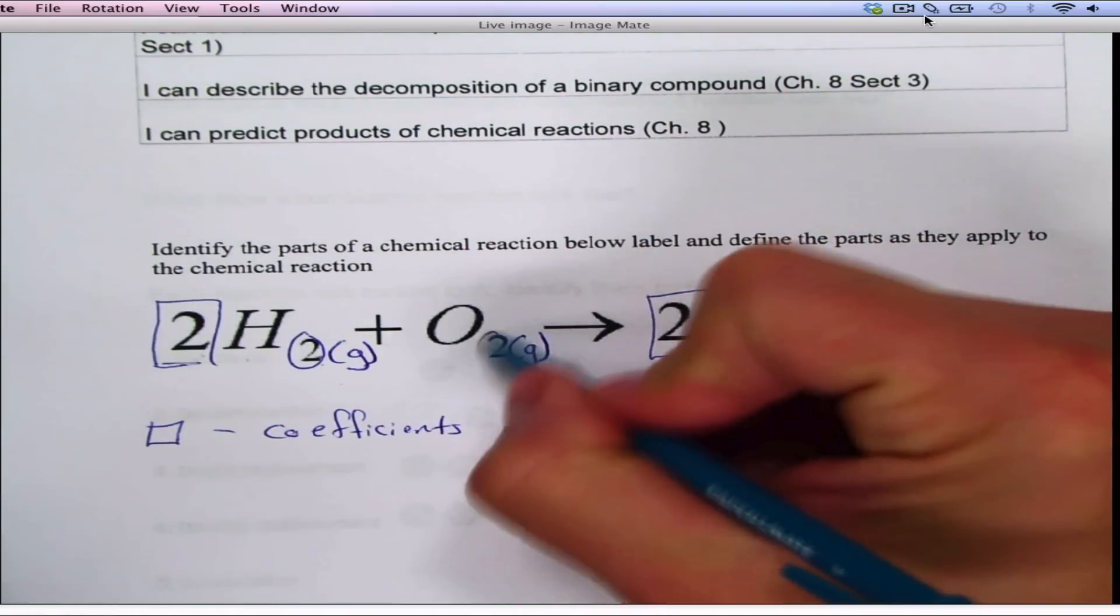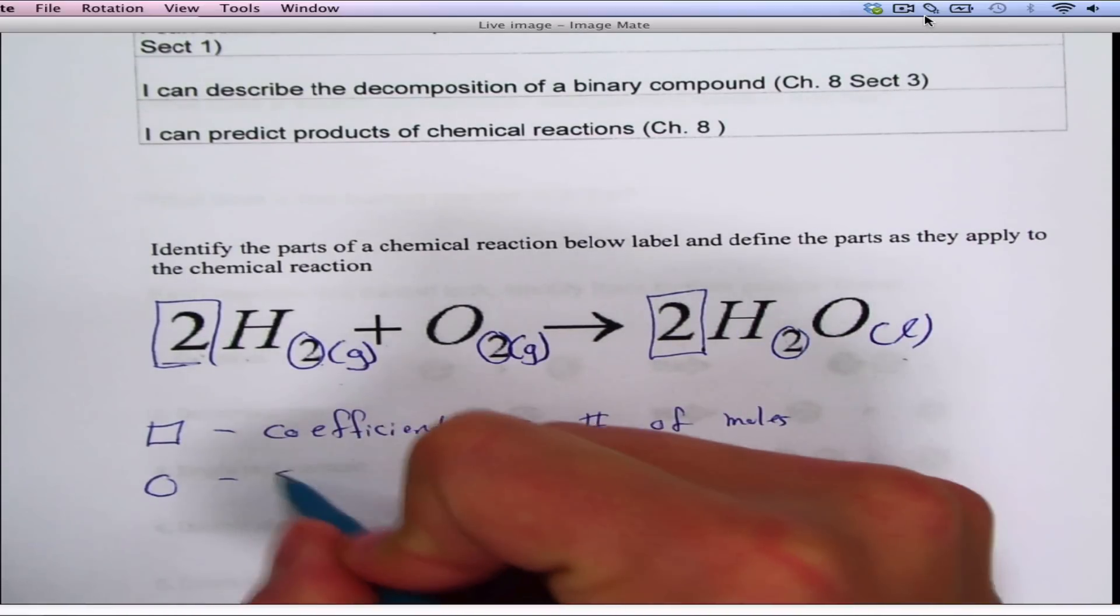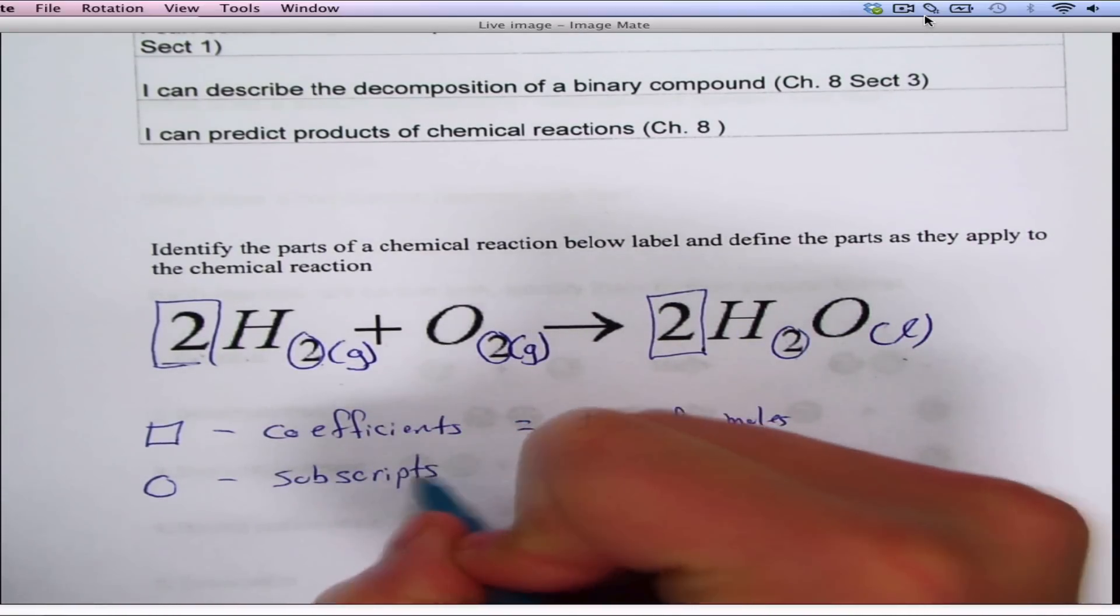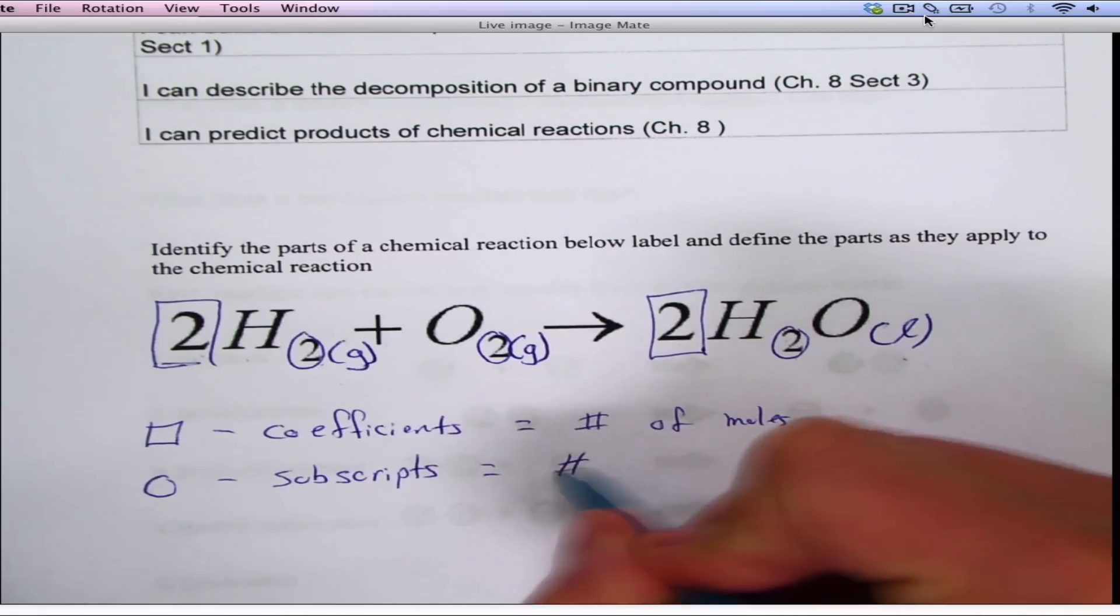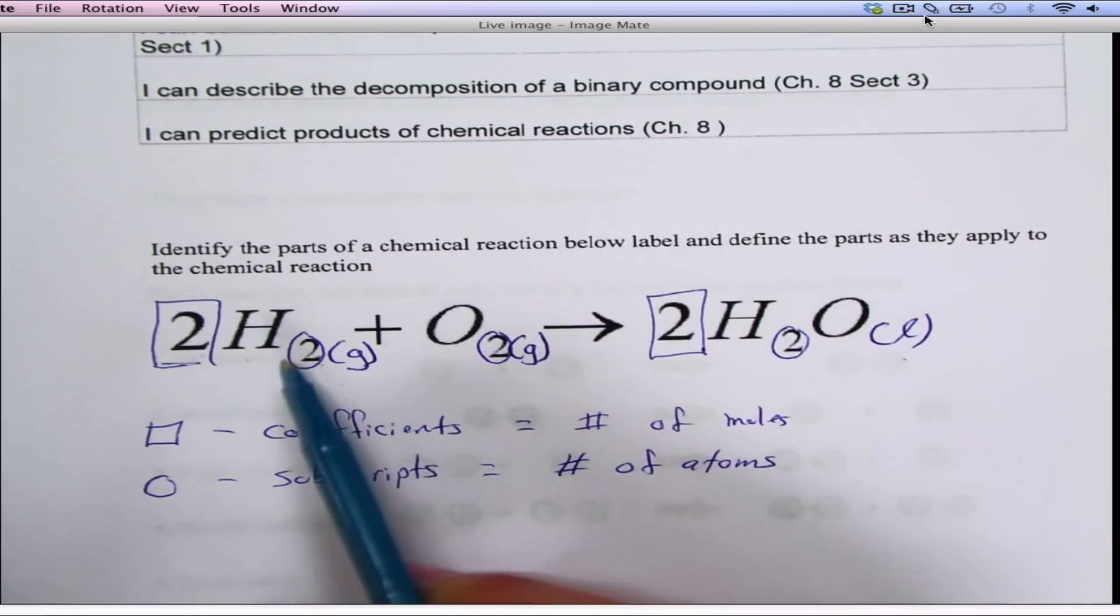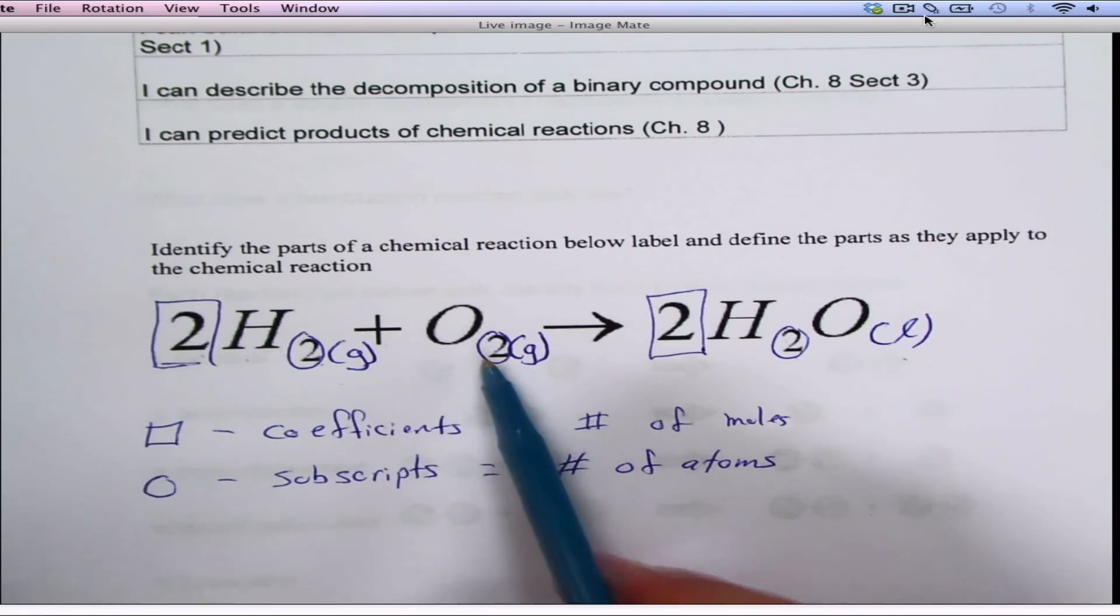These numbers right here, those are called subscripts. Those tell you the number of atoms. For example, here I have two atoms of hydrogen in H2, two atoms of oxygen in O2, and in H2O there are two atoms of hydrogen and one atom of oxygen.